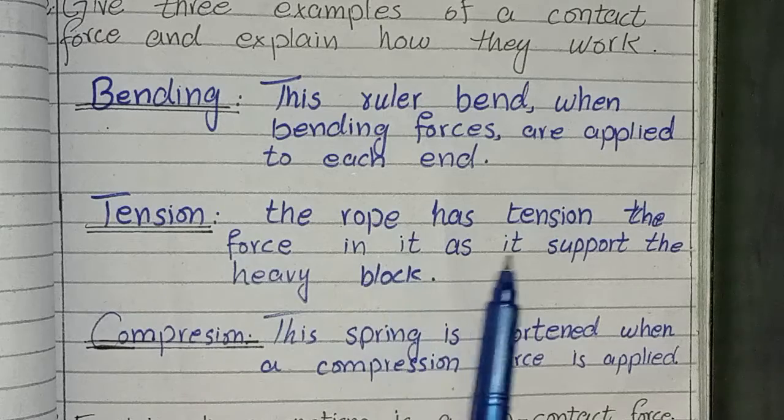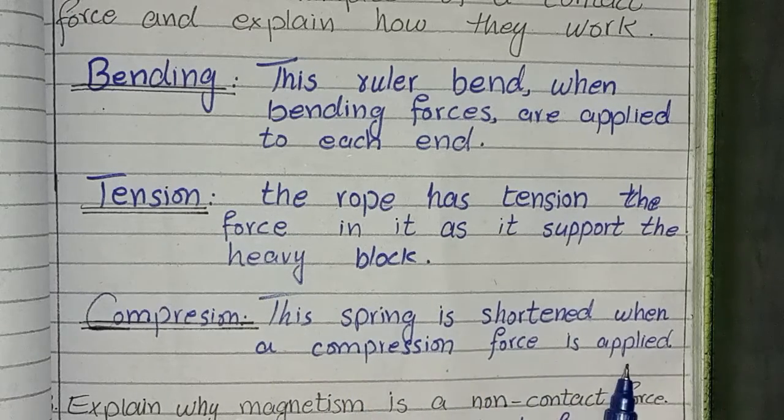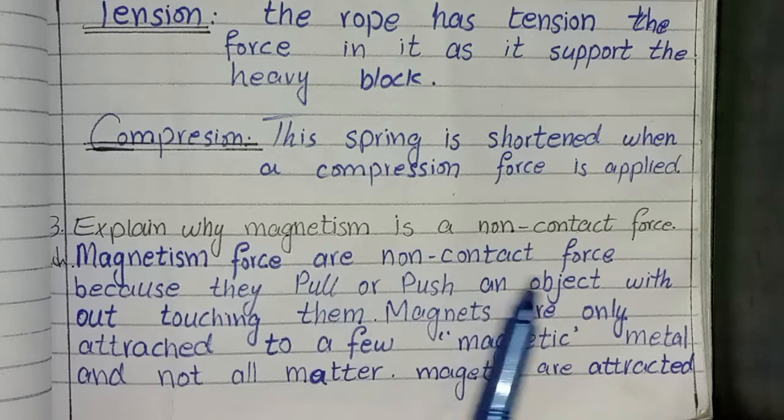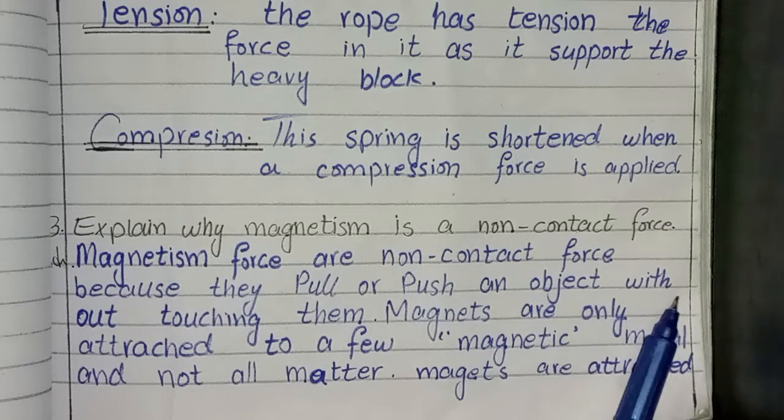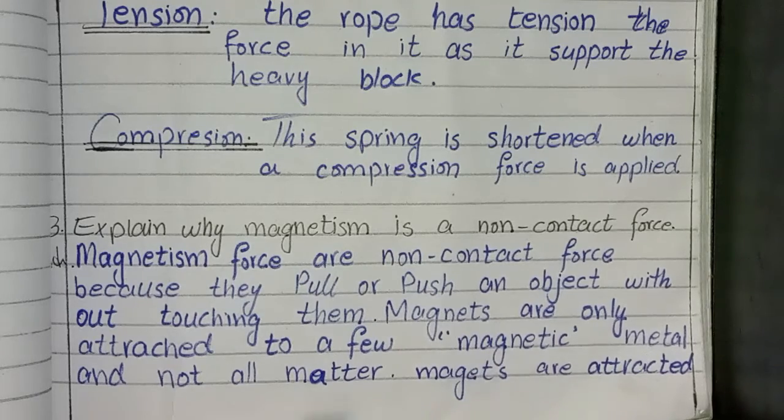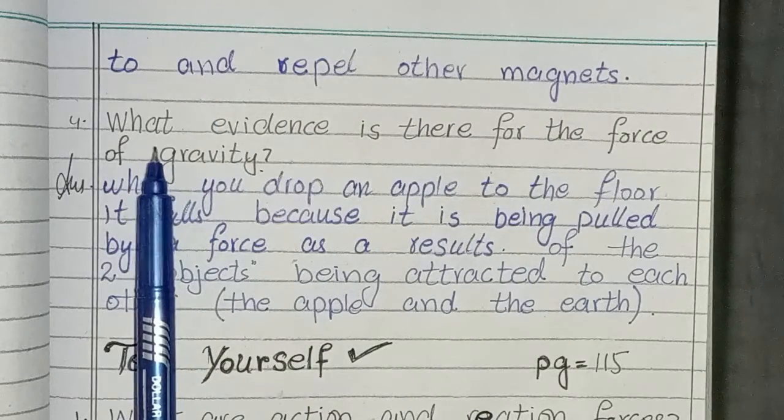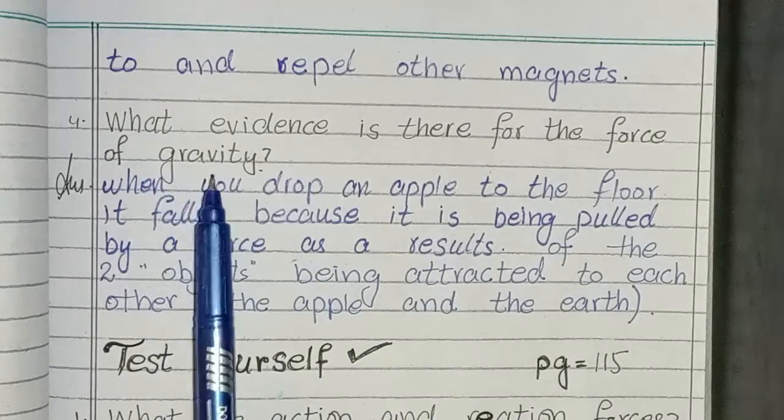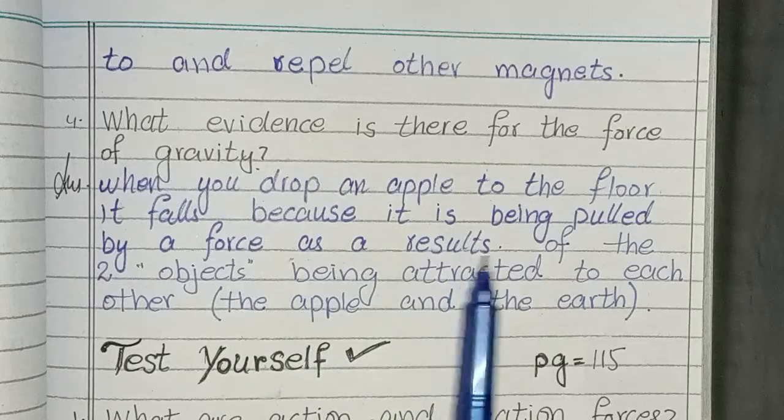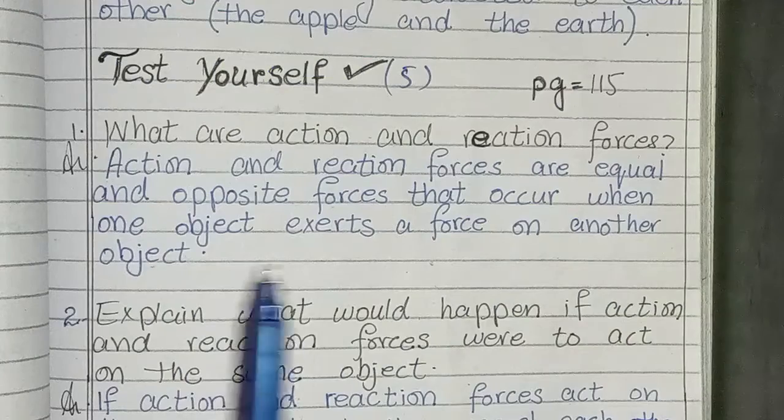Explain why magnetism is a non-contact force. Magnetism force is a non-contact force because they pull or push an object without touching them. Magnets are only attached to a few magnetic metal and not all matter, magnets attract and repel other magnets. Fourth question: what evidence is there for the force of gravity? When you drop an apple to the floor, it falls because it is being pulled by a force as a result of the two objects being attached to each other, the apple and the earth.